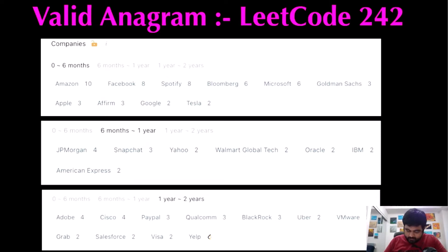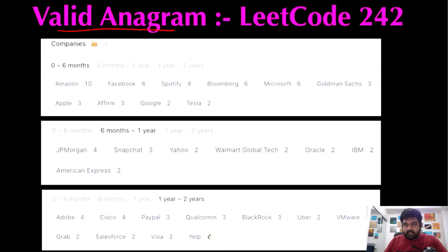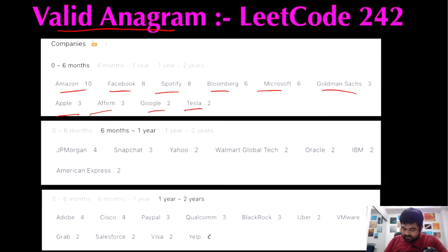Hello friends, we are still not employed by a FAANG company so let's not stop LeetCoding till we get there. Today we are going to do the Valid Anagrams LeetCode problem, and if we see some of the companies that have asked this question — Amazon, Facebook, Spotify, Bloomberg, Microsoft, Goldman Sachs, Apple, Affirm, Google, Tesla, Snapchat, Yahoo, and Uber — that's why I am paying my utmost attention. I hope you also enjoy the video.